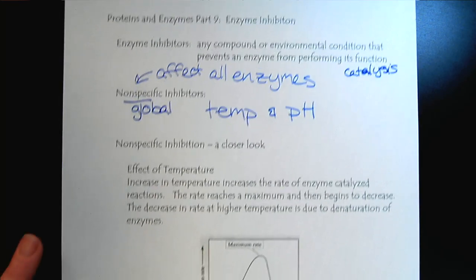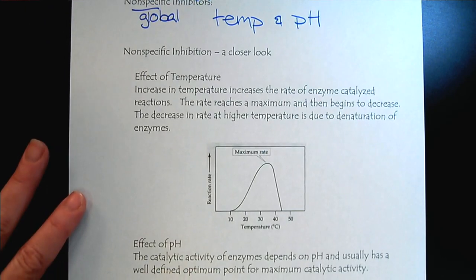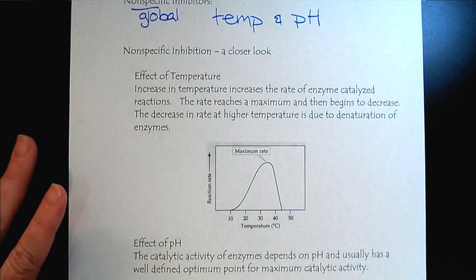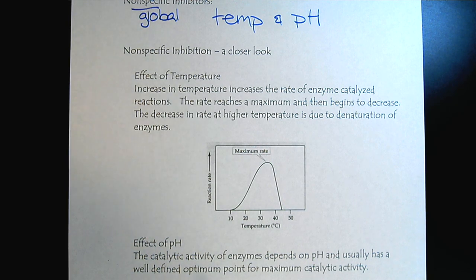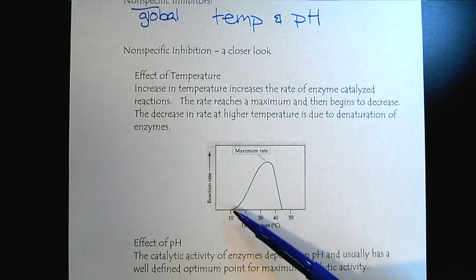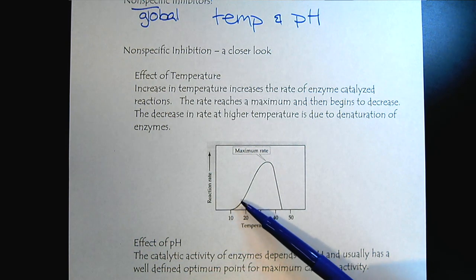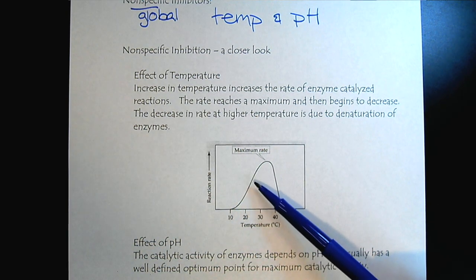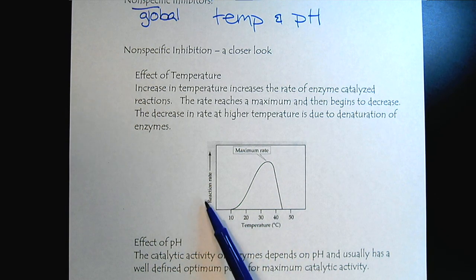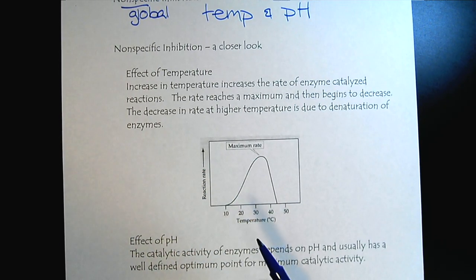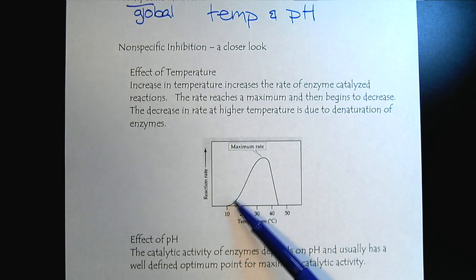So let's look at temperature first. If we think back to collision theory and what's going on for reactions to occur, we learned that initially, as we increase the temperature, we're increasing the kinetic energy. So here's temperature along the x-axis and reaction rate along the y-axis. So as we increase the temperature, as we would expect, we increase the reaction rate, because we're bringing in more kinetic energy.